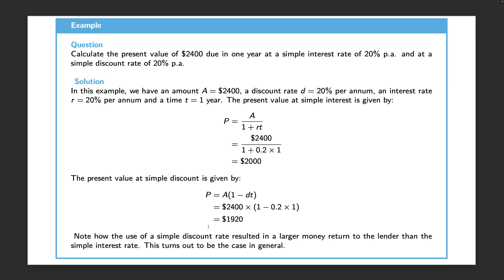On the flip side, if we started with $1,920 we get to $2,400 in one year using simple discount, but to reach that same $2,400 we would need $2,000 at the beginning of the year under simple interest. This is true in general: if the discount rate equals the interest rate, you accumulate faster under the discount rate — or equivalently, you discount faster under the discount rate.